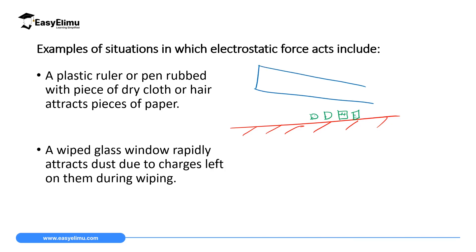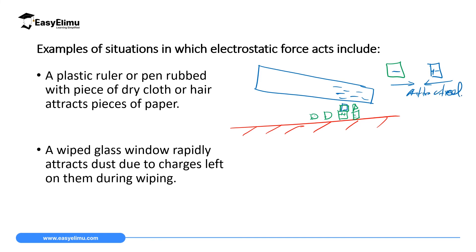When you rub your ruler with a dry cloth, the ruler becomes negatively charged. When it comes close to the neutral pieces of paper, the positive part of the paper particles is attracted to the negatively charged ruler. Because opposite charges attract, the pieces of paper are drawn toward the ruler. This will be discussed further in the topic called Electrostatics.